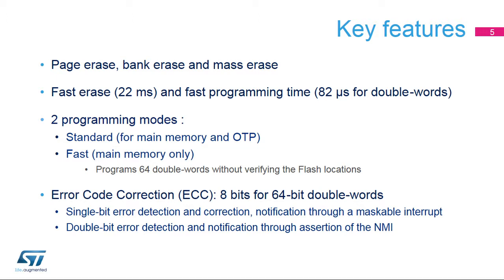Fast programming also avoids the rising and falling time of the high voltage for each double word write. An 8-bit ECC code is appended to the double word to be programmed. It is checked on read to detect and correct single-bit errors and detect double-bit errors. In case of an uncorrectable error, the flash memory controller asserts the non-maskable interrupt (NMI) to the Cortex-M4.